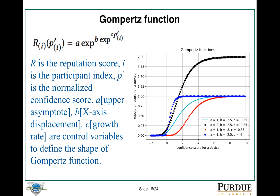For the Gompertz function, it has three control parameters: A stands for the upper asymptote — it's the upper bound; B is the X-axis displacement; and C is the growth rate. That's a general graph of the Gompertz function.